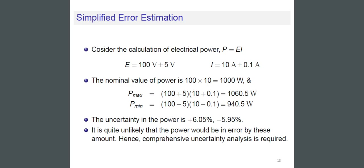Simplified error estimation. Consider the calculation of electrical power. Power P is equal to EI, where E is equal to 100 volt ±5 volt and I is equal to 10 ampere ±0.1 ampere.